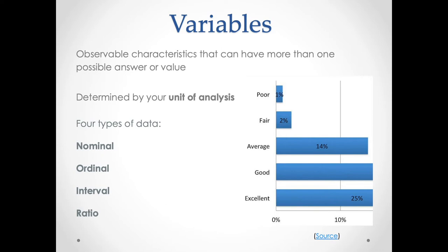If you only have one value of your variable, you're not going to have that thing change because it's constant — it's always the same thing. So as you construct your variable, you want to see how it has multiple values. Now, there are four types of variables: nominal, ordinal, interval, and ratio.